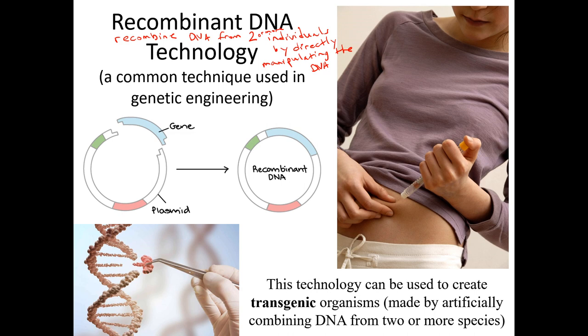It's not always from different species — sometimes it's from one organism to another of the same species. If it's done between different species, it creates what are called transgenic organisms, made by artificially combining DNA from two or more species. Previously, to get DNA from one species into another, you had to combine them directly. For example, breeding a horse and a donkey creates a mule, but mules are sterile. Similarly, a tiger and lion can produce a liger, but ligers can't reproduce. It's easier for plants to cross species barriers — you can make grapples by breeding grapes and apples — but for animals it's a lot tougher.